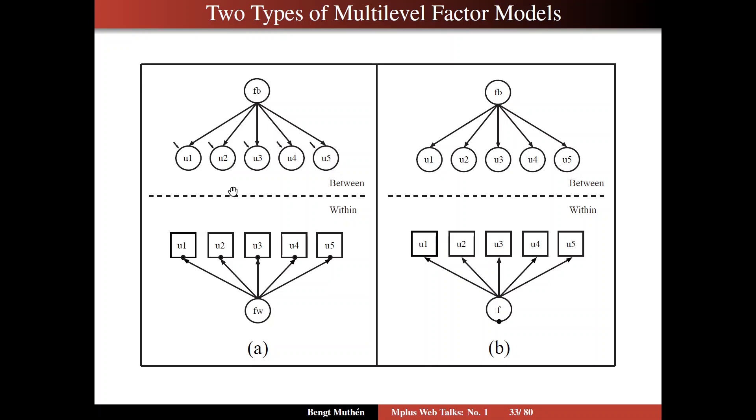On the left-hand side, within variation, this is within school variation, so variation across students. It influences the part of the observed variables that are not influenced by Fb. So these filled circles mean that we have taken out the between level variation in the items, and Fw affects, influences what's left in the u variables, namely the within variation.